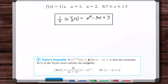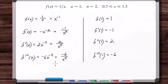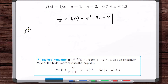The n plus one derivative is the third derivative: f triple prime of x is minus 6 over x to the 4th. The absolute value of that is 6 over x to the 4th.